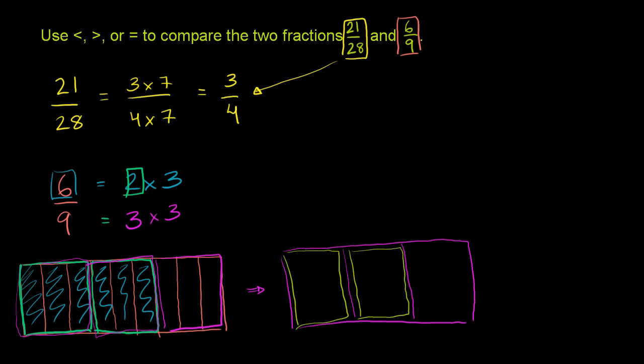This is equivalent to 2/3. But doing the process that we're used to doing, we could imagine 6 is 2 times 3. 9 is 3 times 3. If you divide 2 times 3 by 3, you get 2. If you divide 3 times 3 by 3, you get 3.